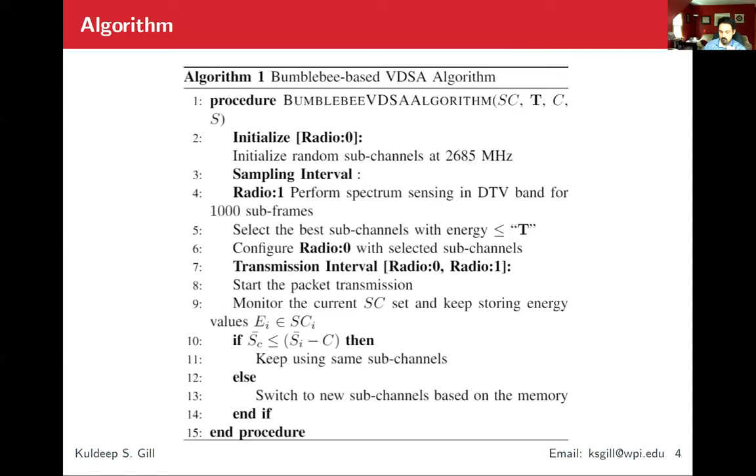Then we start sampling with radio one. Radio one will perform spectrum sensing. This spectrum sensing is time domain spectrum sensing in the TV band for thousands of frames. Thousands of frames is equivalent to one second, which is one frame. Then based on the threshold, we select the best subcarriers. We configure our radio zero with the selected subcarriers and then we start the transmission. In transmission interval, as we are doing the transmission with radio zero, we simultaneously monitor our current subcarrier list using radio zero. If the SINR level holds, we'll keep using the same subchannels. But if the performance degrades, we switch to the new channel.